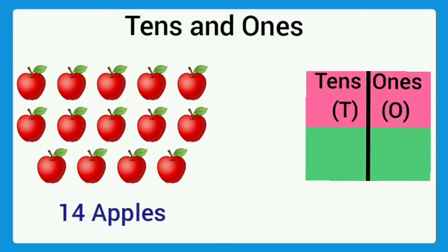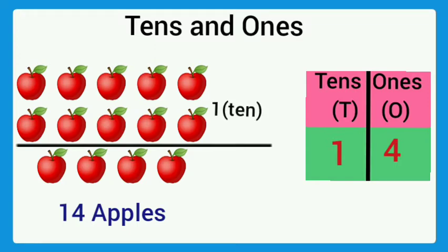How to write 14? 1 in the tens place and 4 in the ones place. That is 1 ten and 4 ones. So the place value of 1 is 10, the place value of 4 is ones.